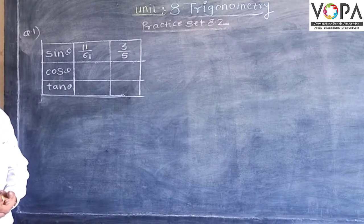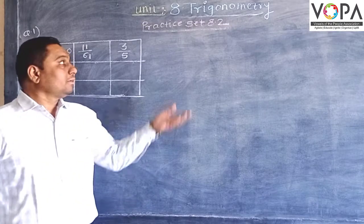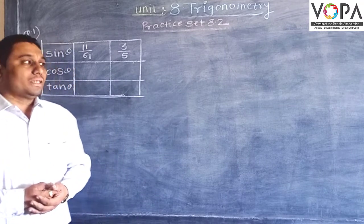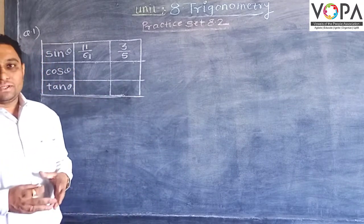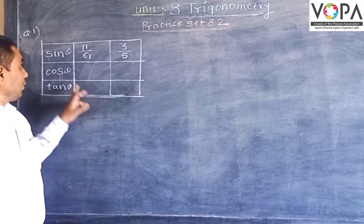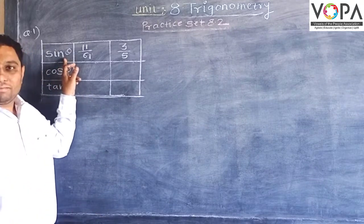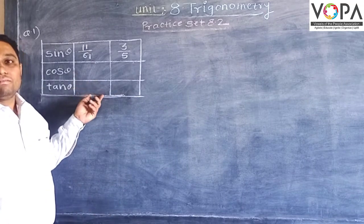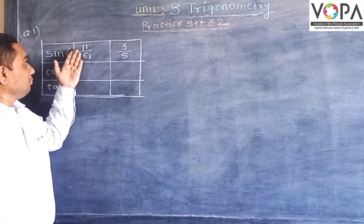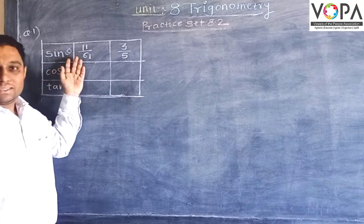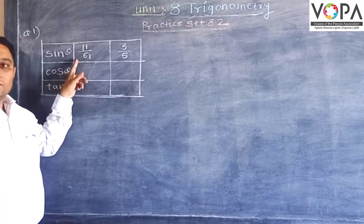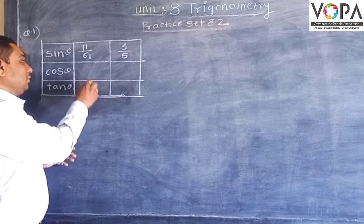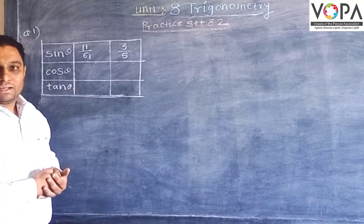Hello friends, now we are going to see the practice set number 8.2. Let us take the first example from this practice set 8.2. Here we have given a table. We are taking one practice value where sin theta is given as 11 upon 61, and we have to find out the values of cos theta and tan theta.